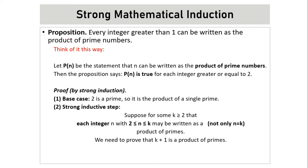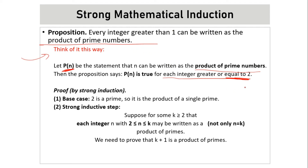Let's see an example for strong mathematical induction. The proposition is that every integer greater than one can be written as a product of prime numbers. Let P of N be the statement that N can be written as a product of prime numbers. The proposition says P of N is true for each integer N greater than or equal to two, since we cannot perform a product of primes for one.